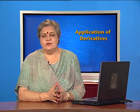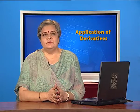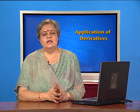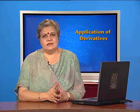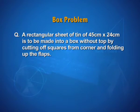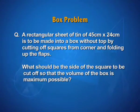The statement is long, but it is one of the questions from your NCERT textbook. So let us see if you can keep up with it. The statement says, a rectangular sheet of tin of 45 cm by 24 cm is to be made into a box without top by cutting off squares from corners and folding up the flaps. What should be the side of the square to be cut off so that the volume of the box is maximum possible?